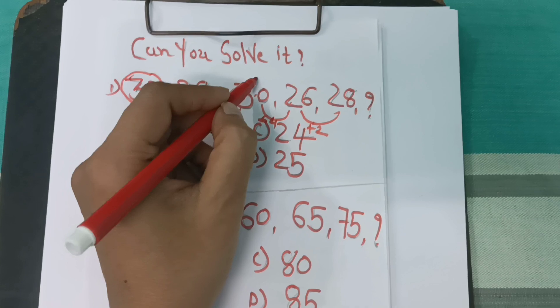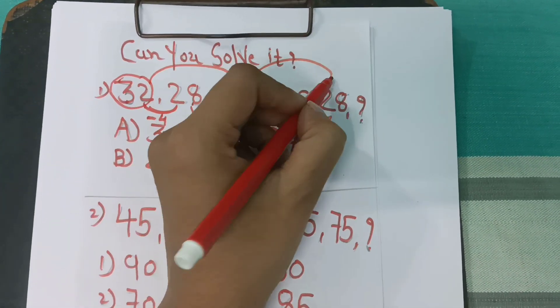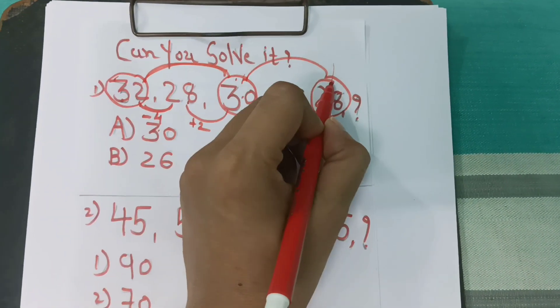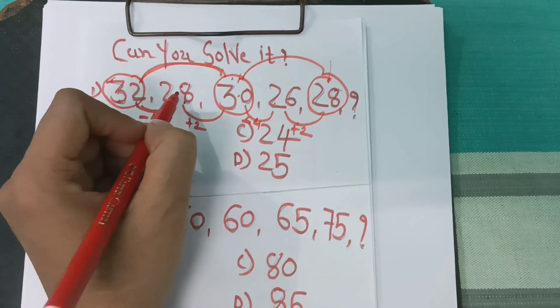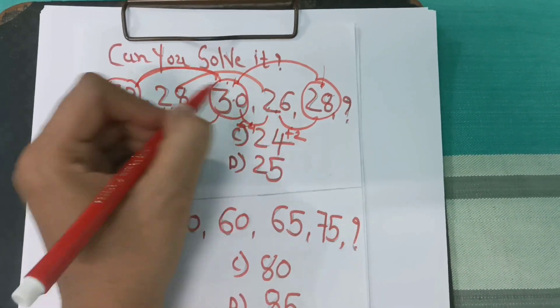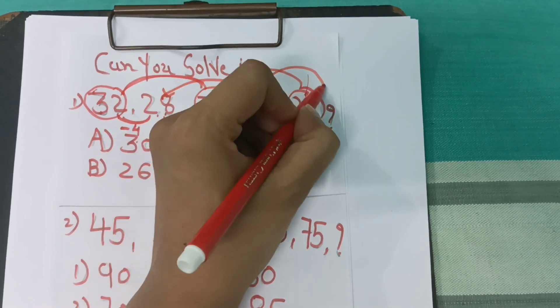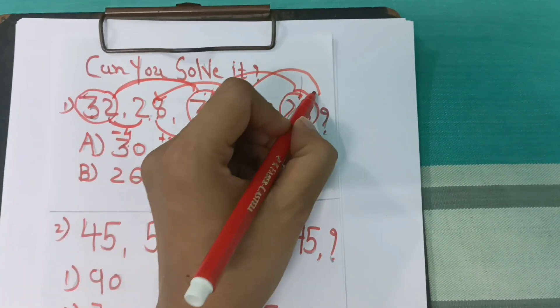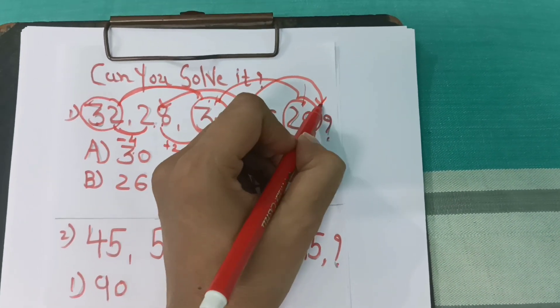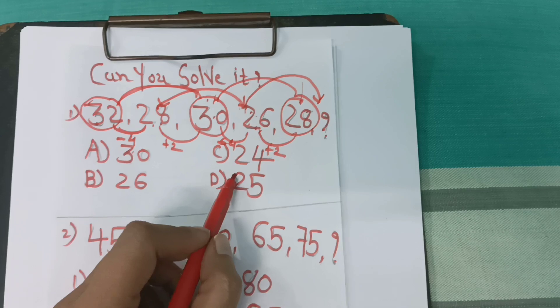But if we see that this is 32, this is 30, that's minus 2, and this is minus 2. And here 28 and 26, 28 and 26 is minus 2. Then if we deduct 2, we get the answer. That is 26 minus 2, so we get 24. So the answer is 24.